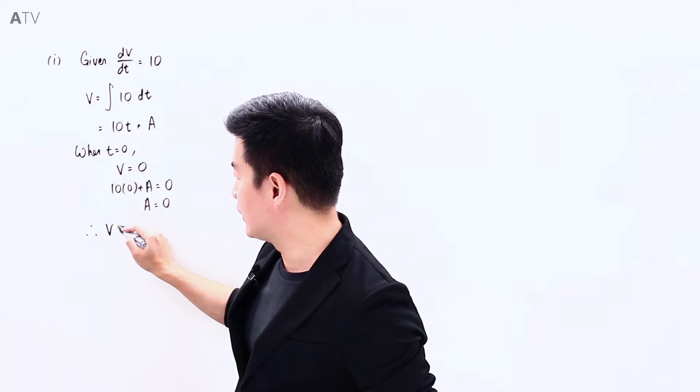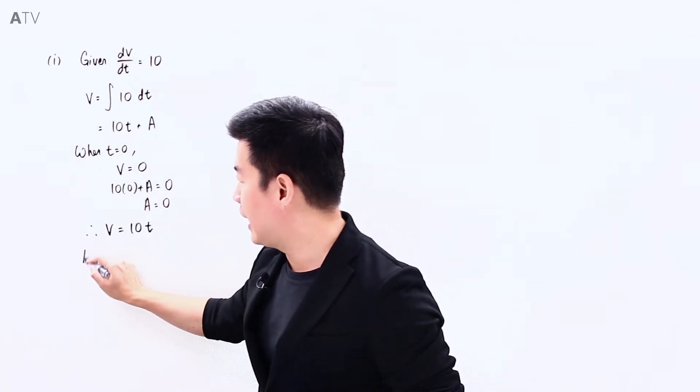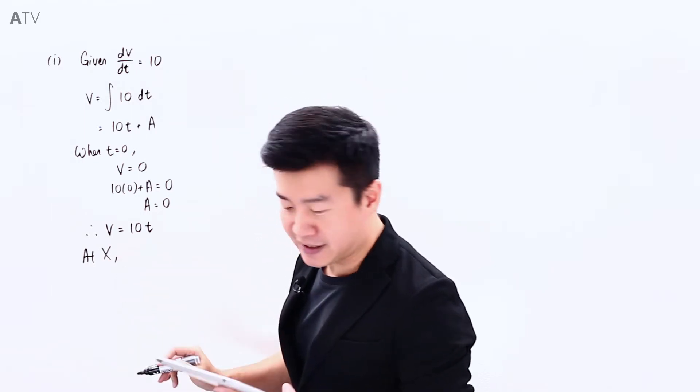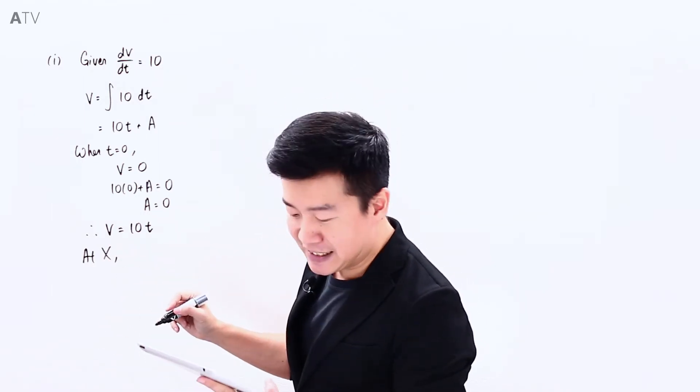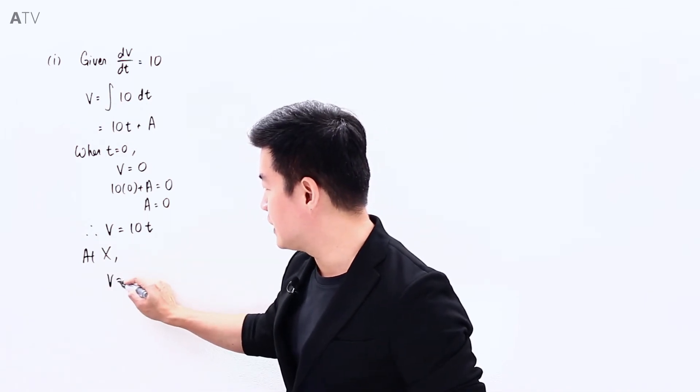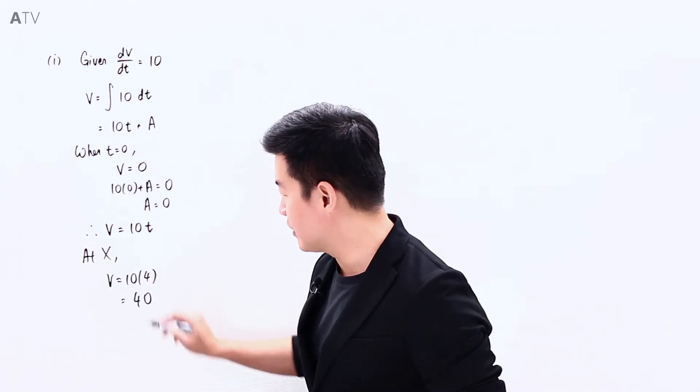Therefore, I know that the velocity is going to be just 10 multiplied by t. And at the point x, that is when she has been falling for 4 seconds. So that is when t is equal to 4, which means that the velocity will be 10 multiplied by 4. So the velocity will be 40.